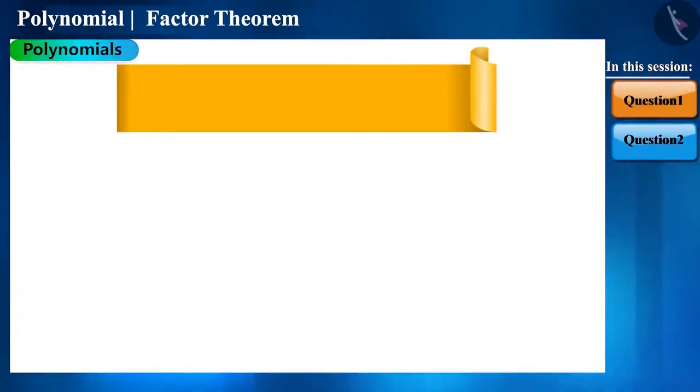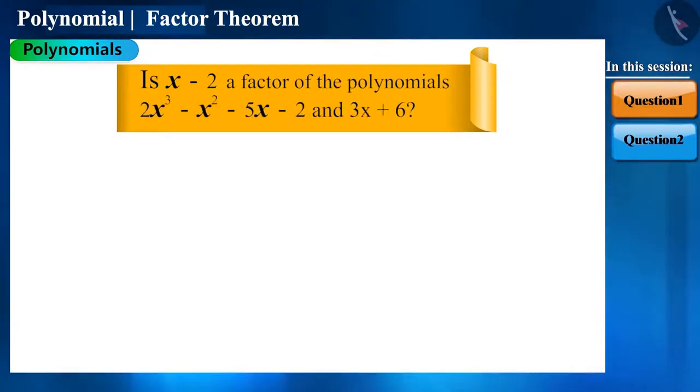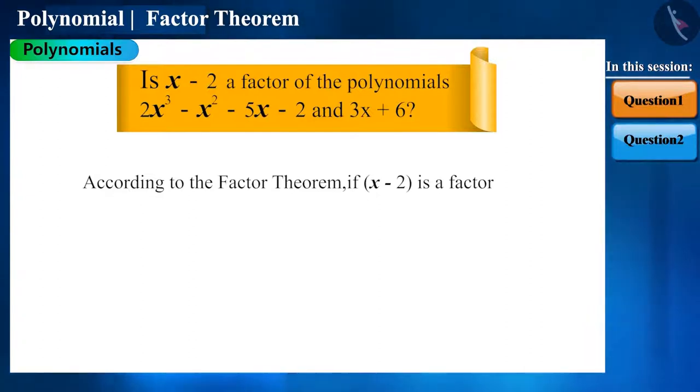So let's start with the first question. Check whether x minus 2 is a factor of the given polynomials. According to the factor theorem, if x minus 2 is a factor of these two polynomials, then p of 2 should be 0, where 2 is obtained by equating x minus 2 to 0.